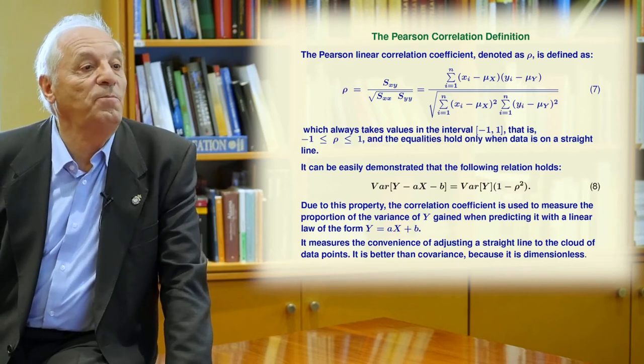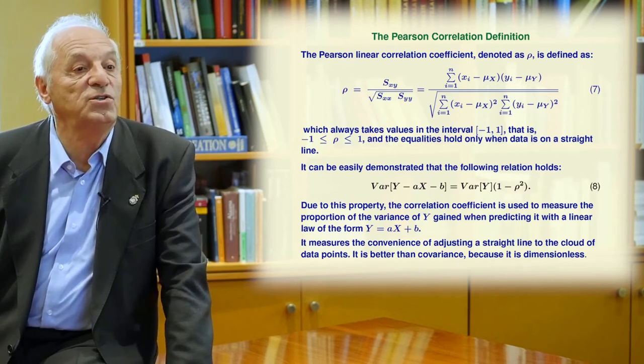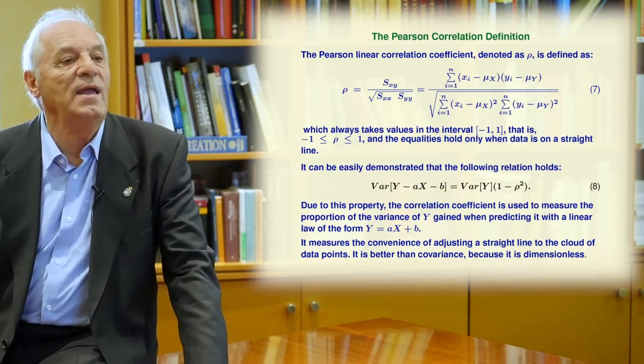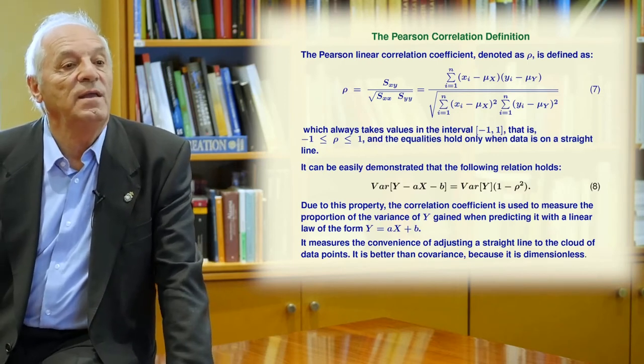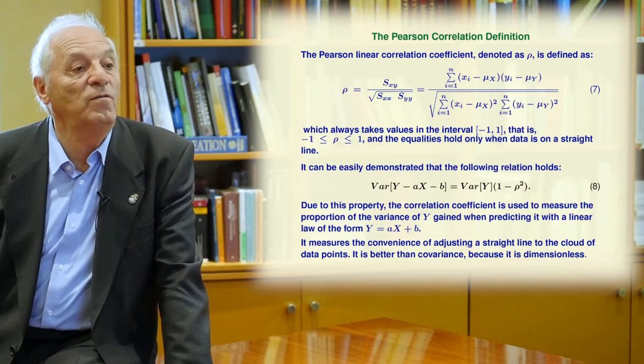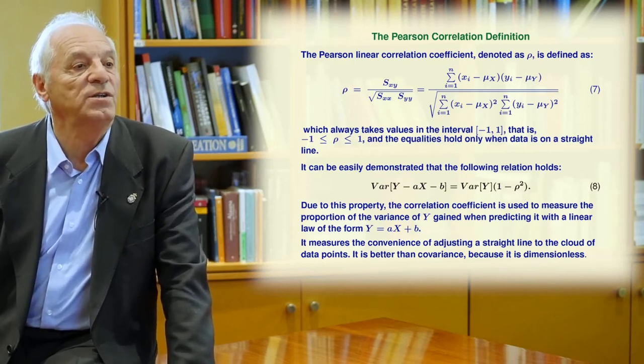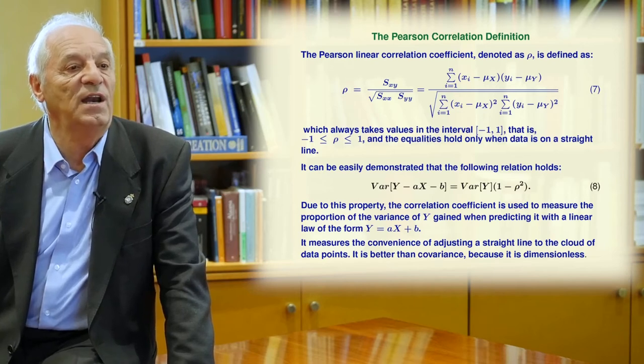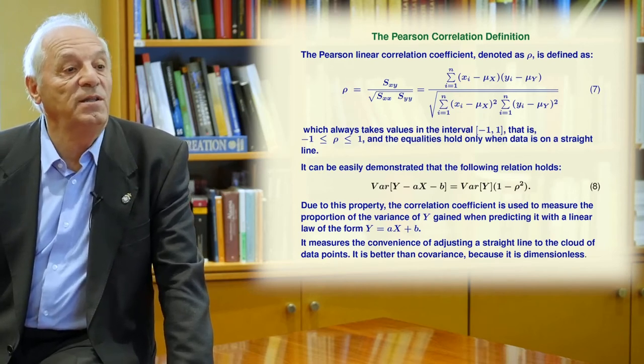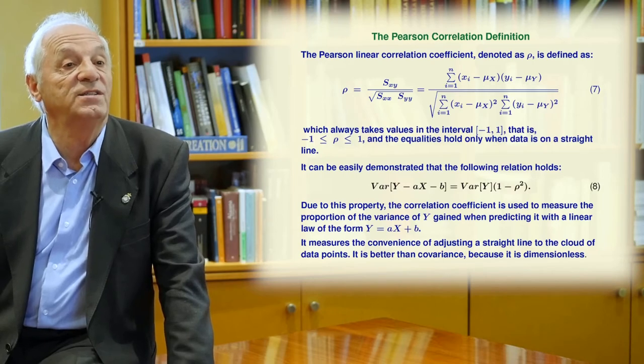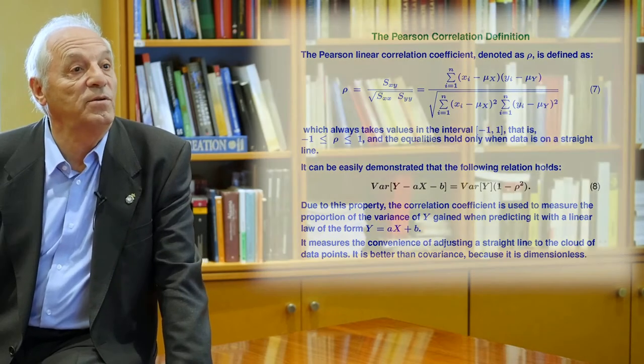Due to this property, the correlation coefficient is used to measure the proportion of the variance of y gained when predicting it with a linear law of the form y equals ax plus b. It measures the convenience of adjusting a straight line to the cloud of data points. It is better than covariance because it is dimensionless. That is an important property.